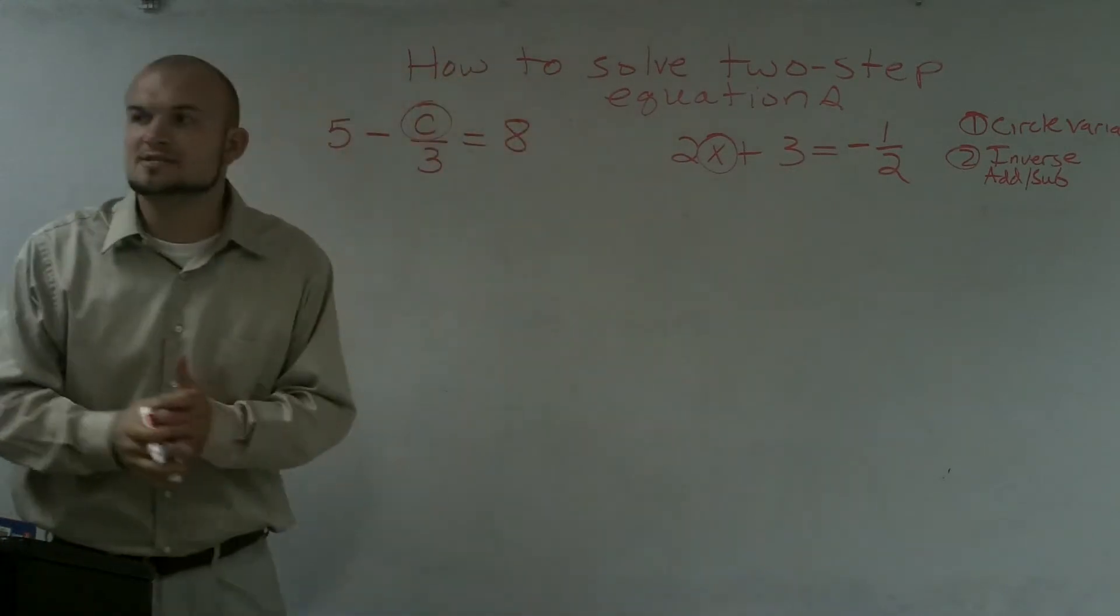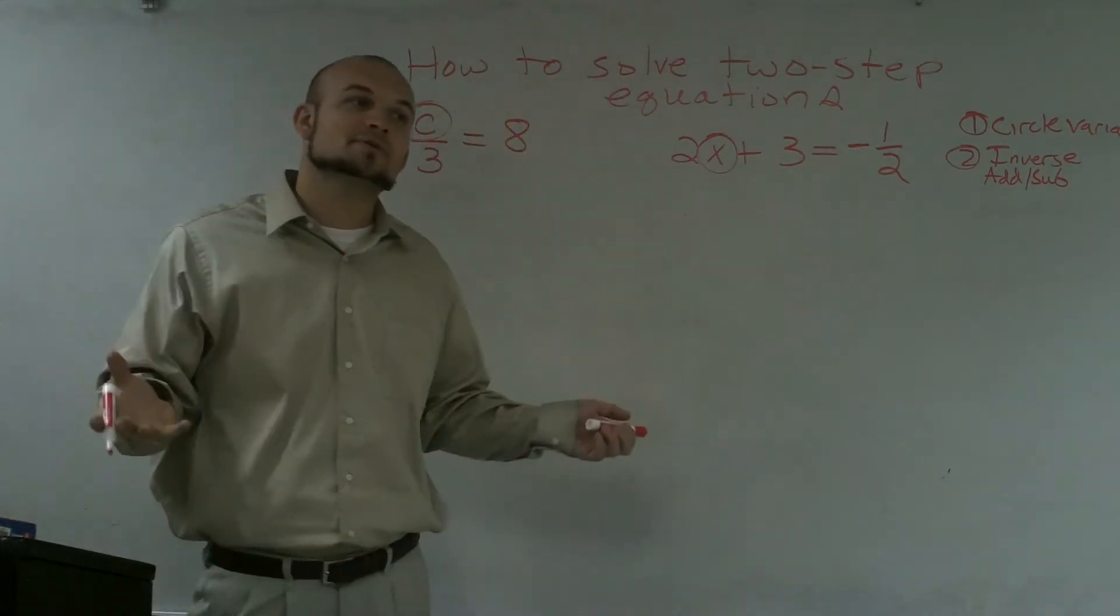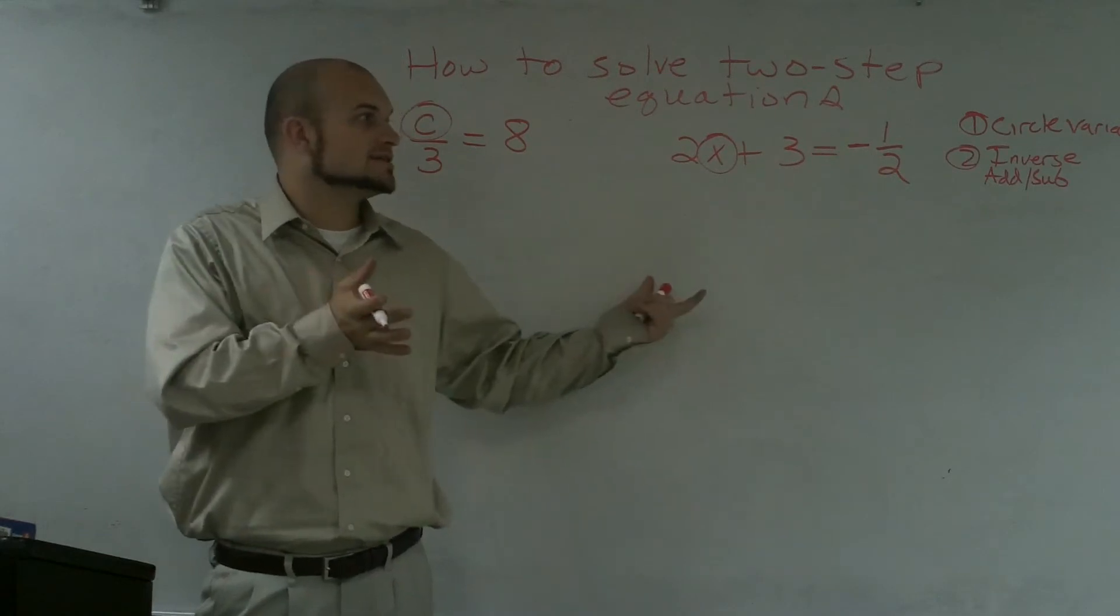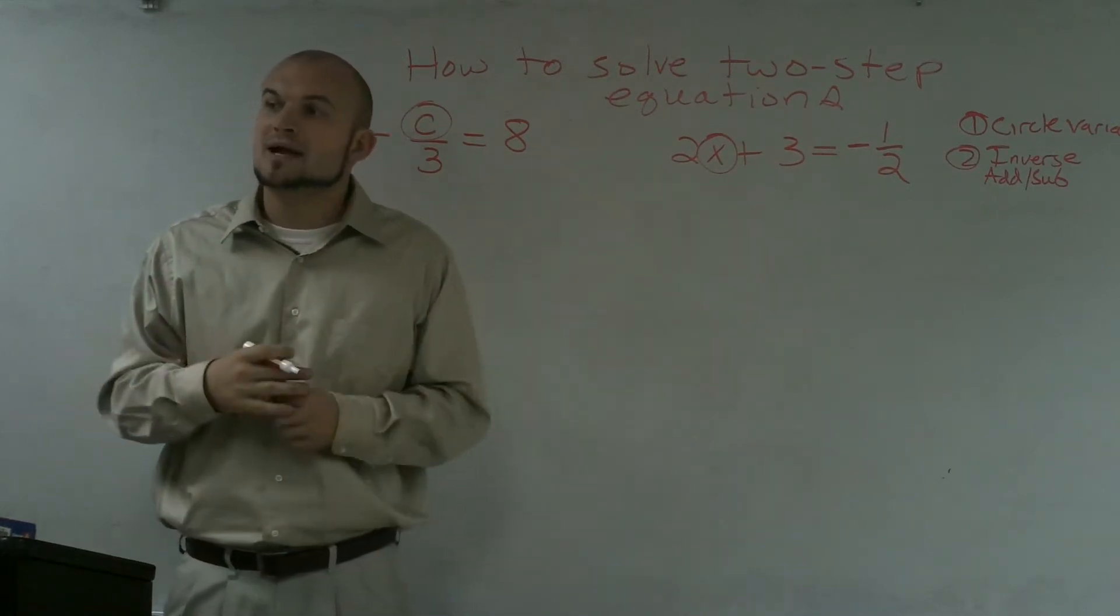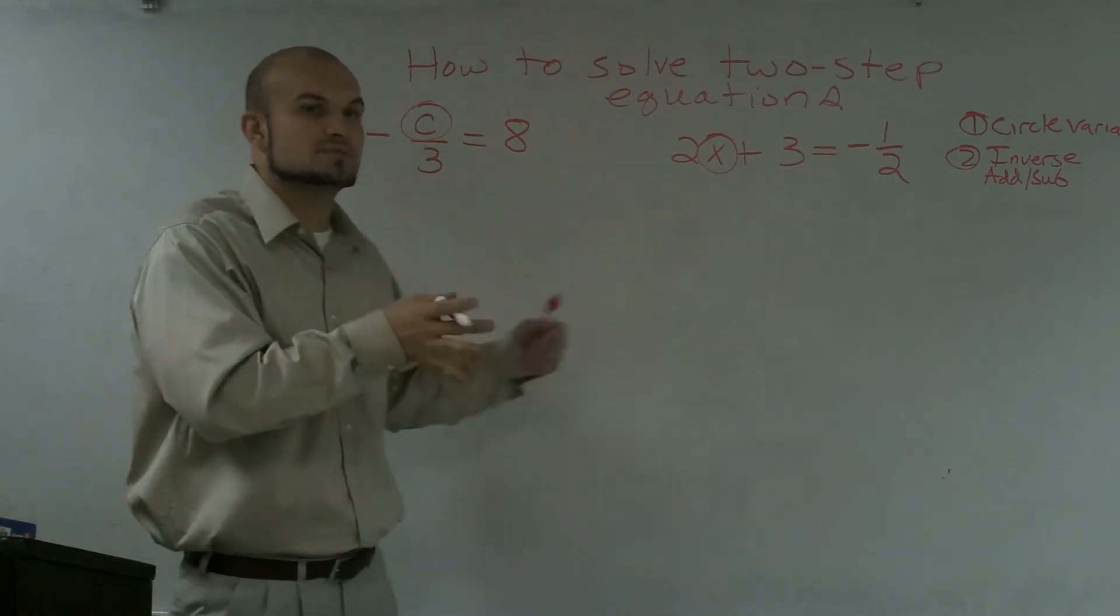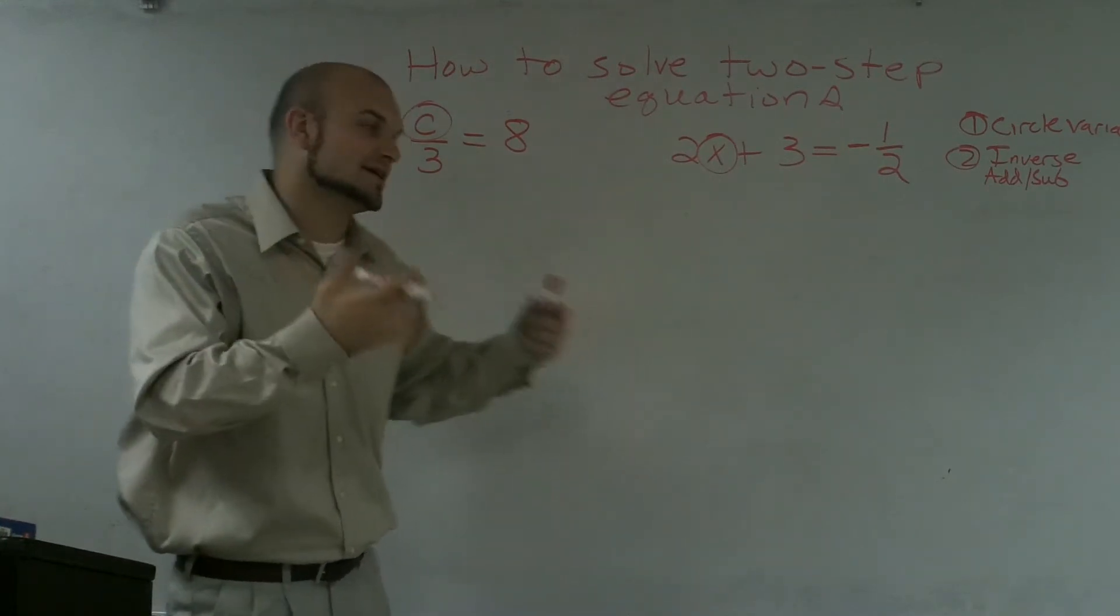The next step is use the inverse operation of adding and subtracting. So you always want to see what is being added or subtracted to the variable. On a one-step equation, you either have adding and subtracting, or you have multiplying and dividing. But on two-step, usually you're going to have addition and subtraction and a multiplication and division.